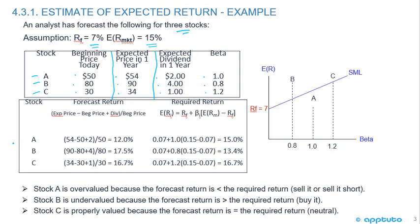We're going to establish whether these stocks are undervalued, overvalued, or fairly valued using the CAPM, which gives us the required return. Step one: calculate the forecast return for each stock using (ending price minus beginning price plus dividend) divided by beginning price. Then compare that to the required return using the CAPM formula: risk-free rate plus beta times the market risk premium, which in this case is 8%.